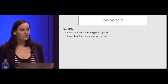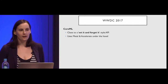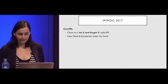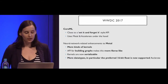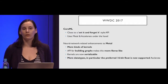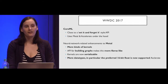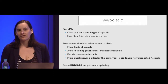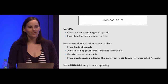CoreML doesn't cost you anything in terms of performance. Everything that the Metal and Accelerate frameworks were already doing is still there under the hood — you just don't need to deal with those APIs anymore. There were also neural network related enhancements for Metal: more kinds of kernels, an API for building graphs, the ability to serialize and save models on device, and many more data types.